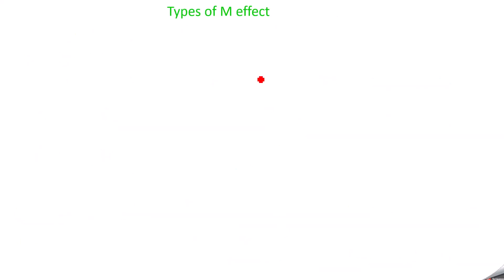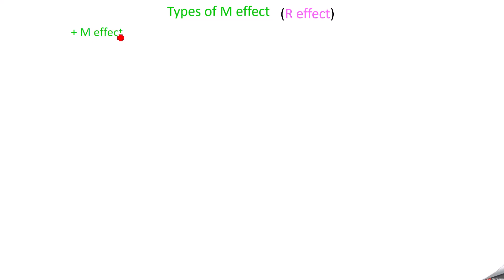Next we will go to the types of M effect, otherwise called R effect. Like inductive effect and electromeric effect, here also you have two types of M effect: one is plus M effect (positive mesomeric effect) and another is minus M effect (negative mesomeric effect).